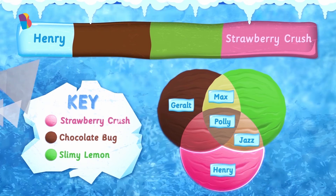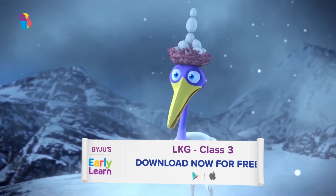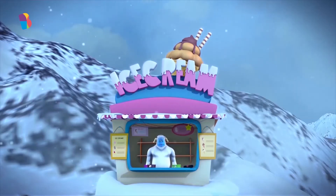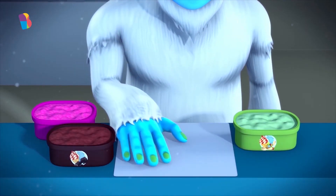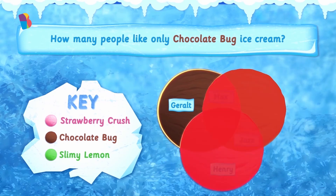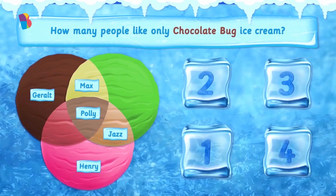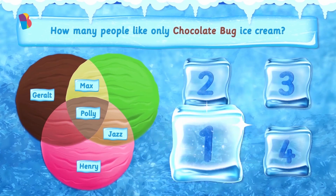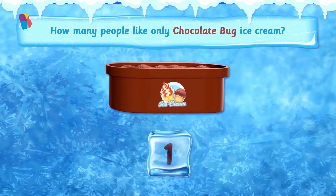I think we're good now. Okay, please get the ice creams then. I shall wait in the shelter. Alright, I still need help understanding how many people like each flavor so I can get the right number of scoops. How many people like only chocolate bug ice cream? Only chocolate bug means we have to look in the brown circle, but only the fully brown part with no other flavors included. Can you tell me how many people like only chocolate bug ice cream by tapping on the correct answer? That's right! The brown part has one person — that's just one person. One chocolate bug coming up.